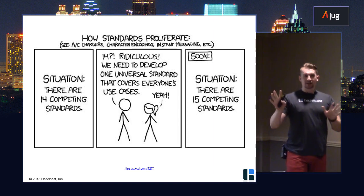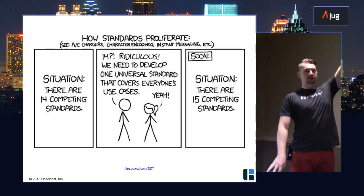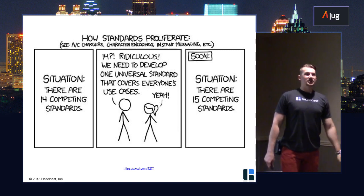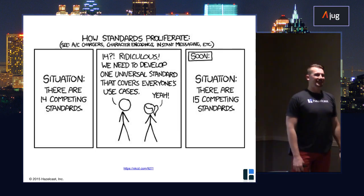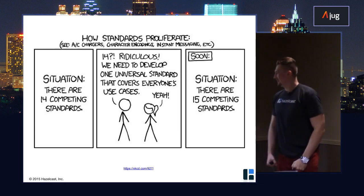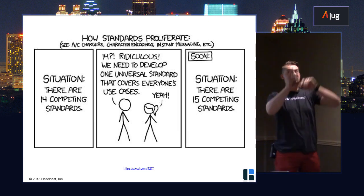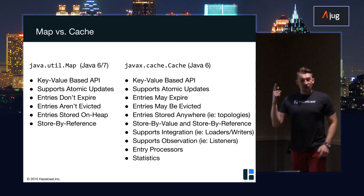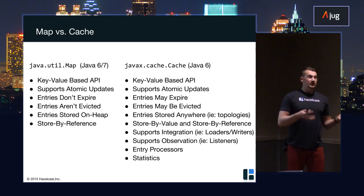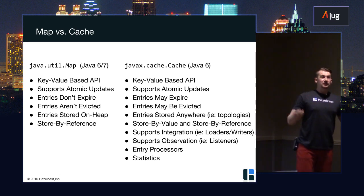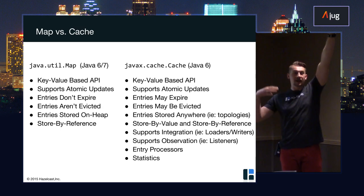So what was the problem with Map? Let me ask you - how many of you ever worked with JCache before today? How many of you read the JCache specification? How many of you implemented the JCache specification, at least some part? Because sometimes when you're doing a talk on a standard, there's definitely one person in the room who can say, 'I implemented it, you're wrong.'